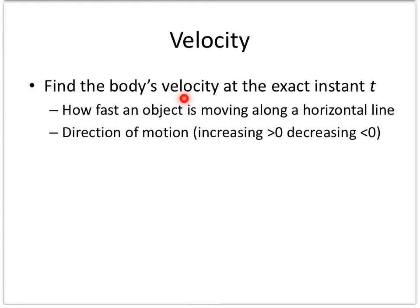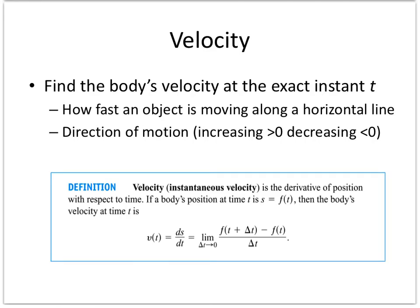When it asks you to find velocity, always assume it's instantaneous — it will tell you if it wants average. So 'find the body's velocity at the exact instant t.' To find velocity, we take that average and stick the limit in front of it. The only difference in this section is we're no longer saying 'slope of the tangent line' — we're saying 'velocity.' It's the same thing.